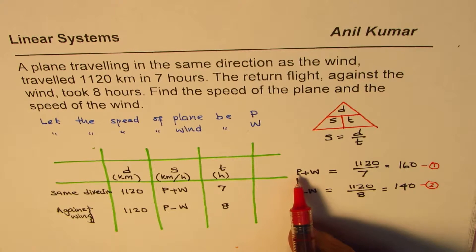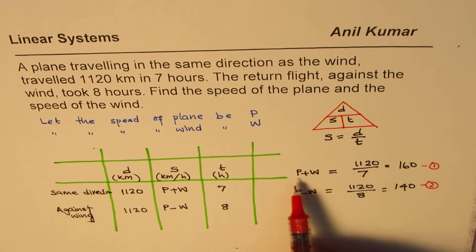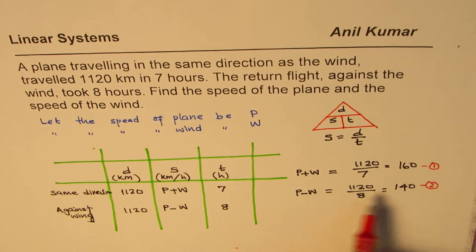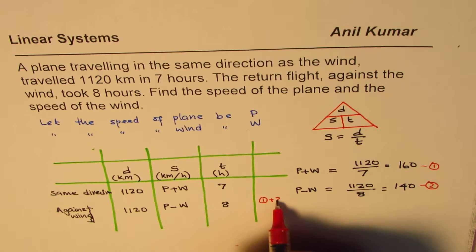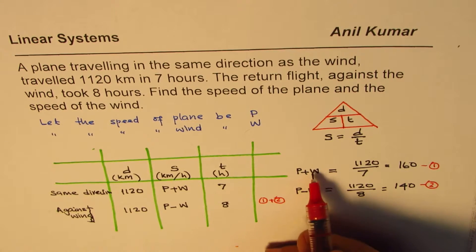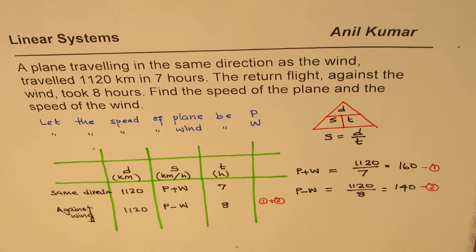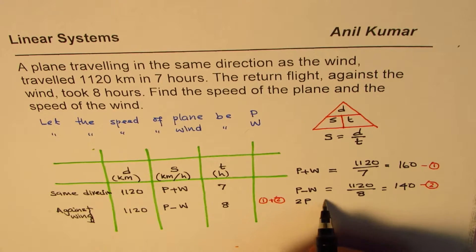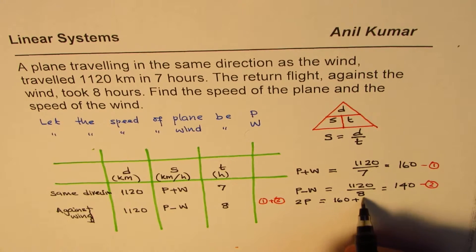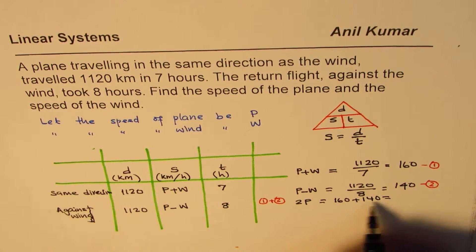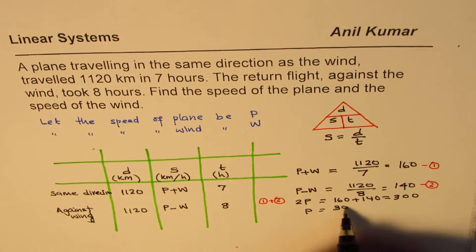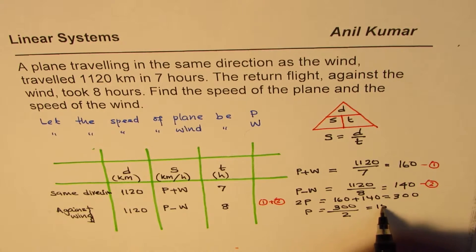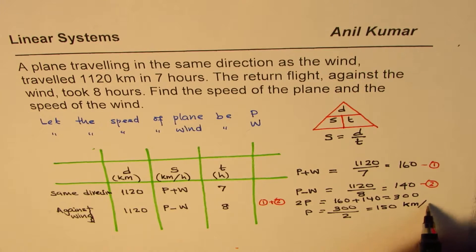Now the idea is to find plane speed and the wind speed. So we have P plus W equals to 160. So if I add these equations, if I add equation 1 and equation 2, clearly we get 2P here, W cancels. So on adding, we get 2P equals to 160 plus 140, which is 300, or the plane speed is 300 divided by 2, which is 150 and the units are kilometers per hour.